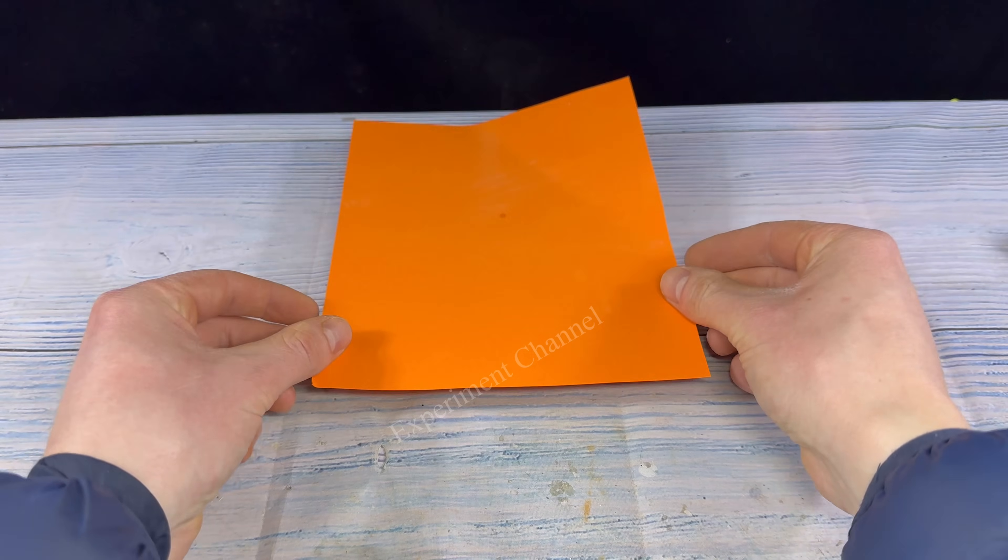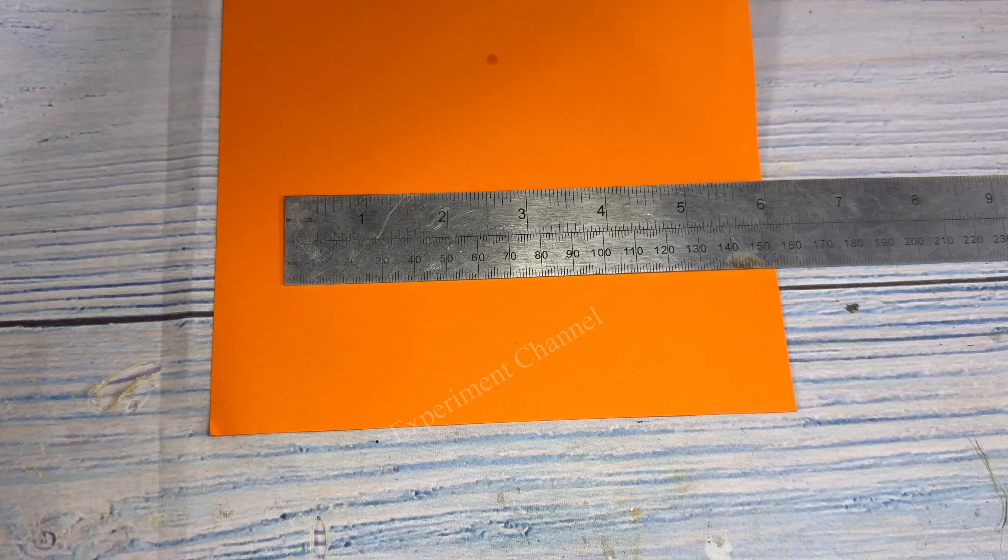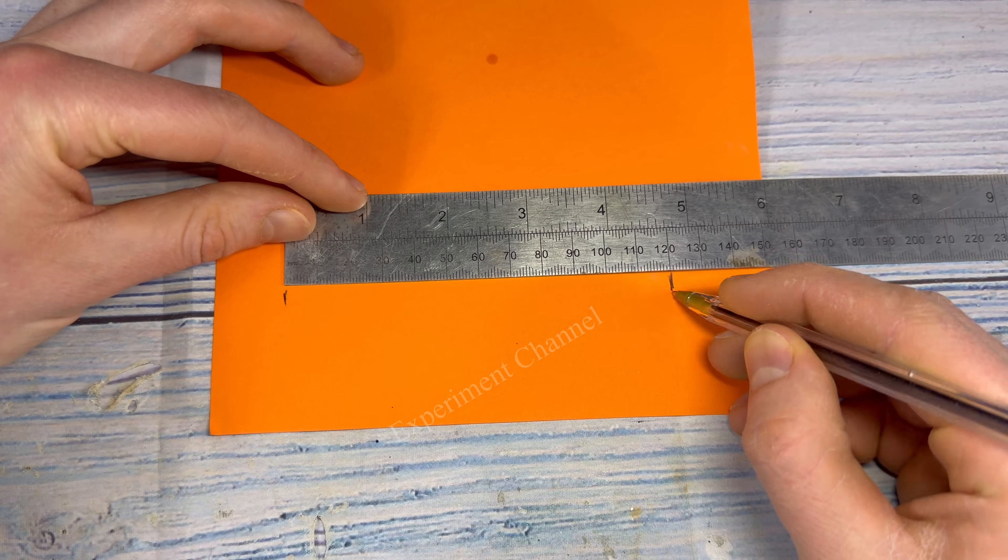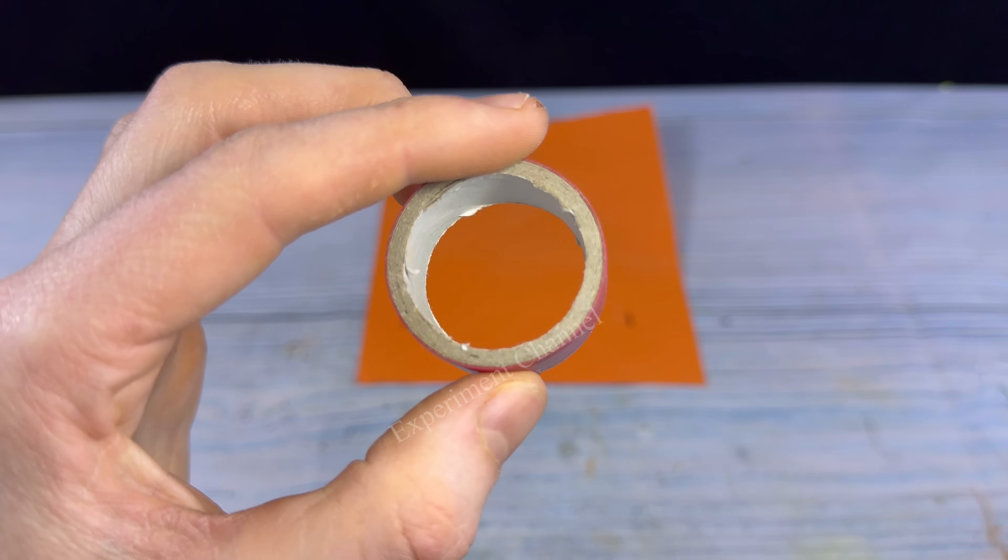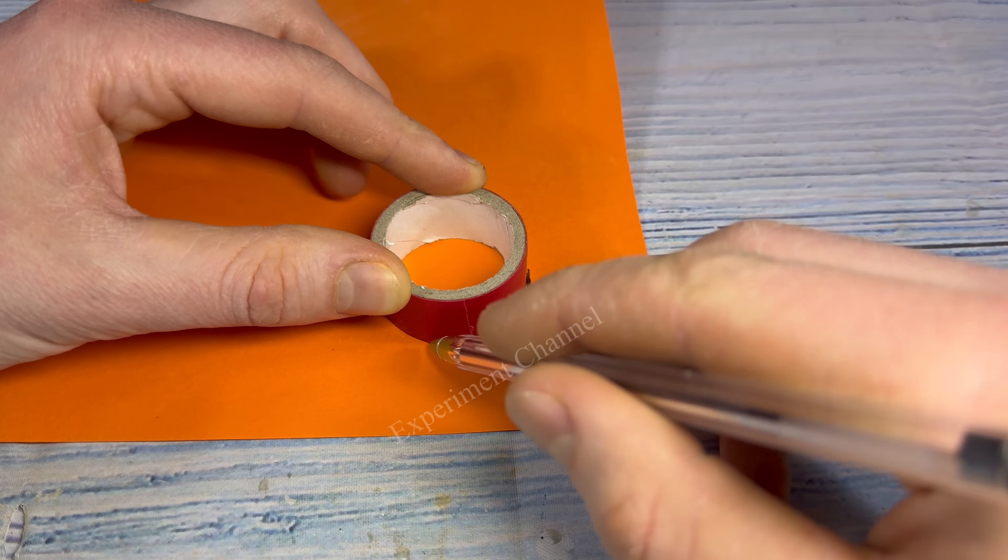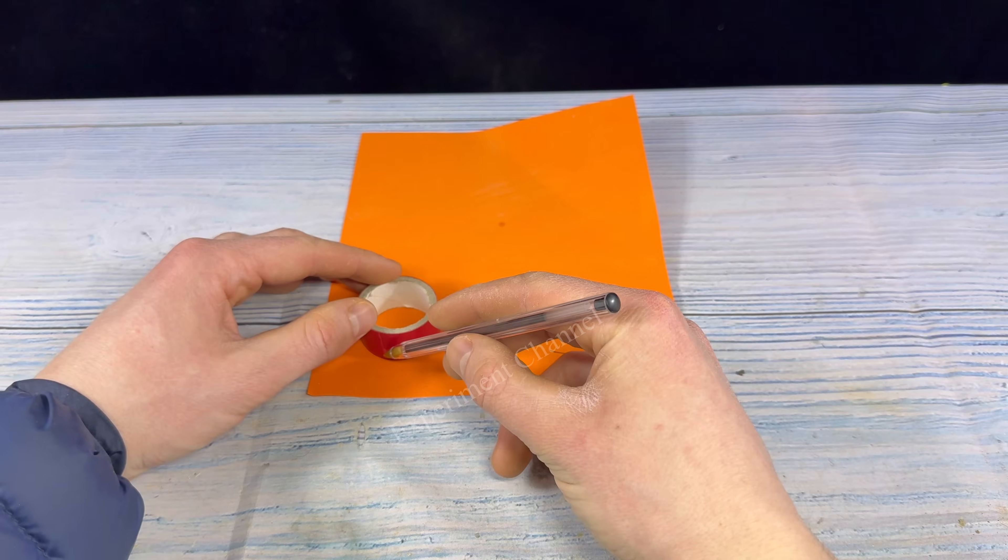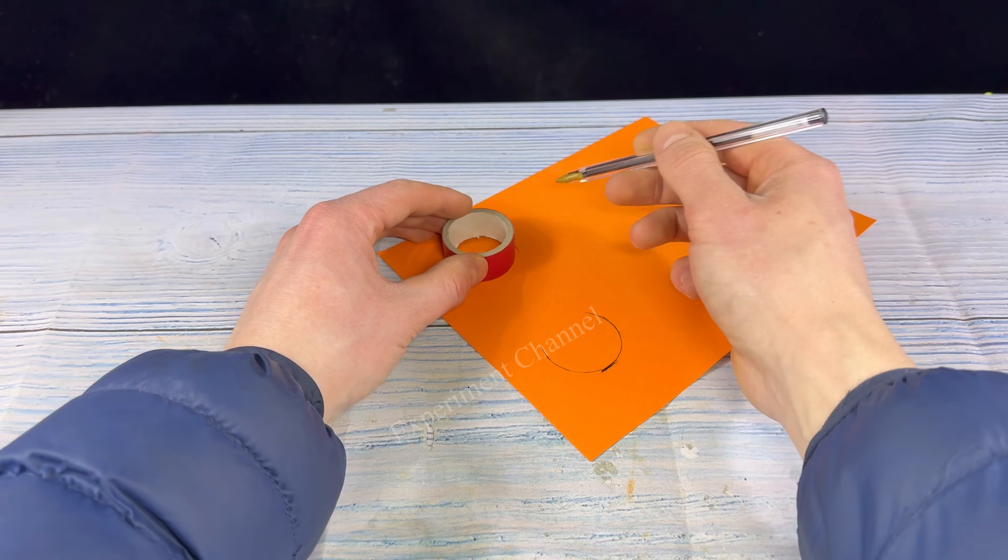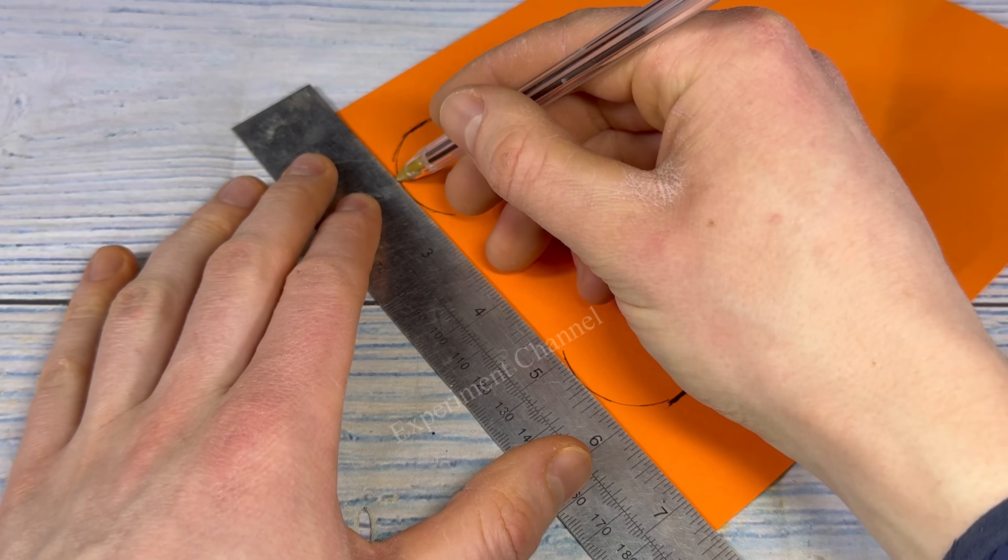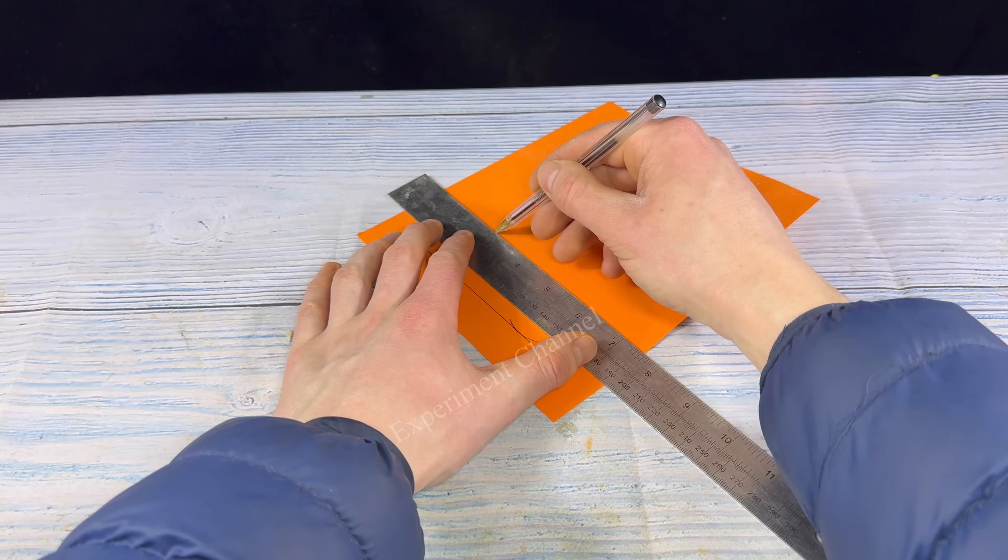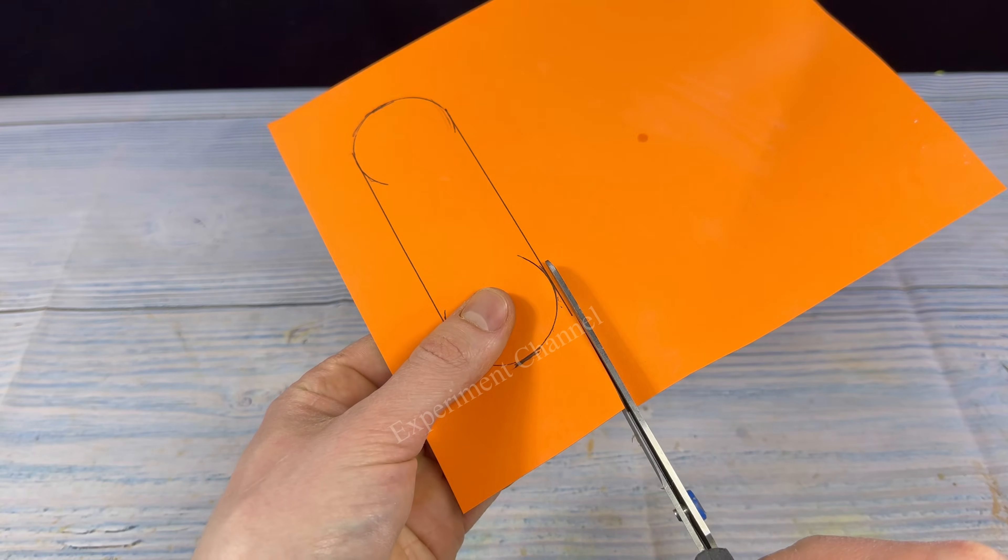Now I'm going to take some card paper to make our wings. Very simple. Just mark out 120mm and now I'm going to take an empty roll of tape and make the curves. Nice, now let's just join up the two half circles together. And now we're going to cut it out.